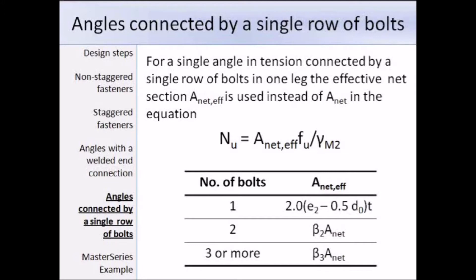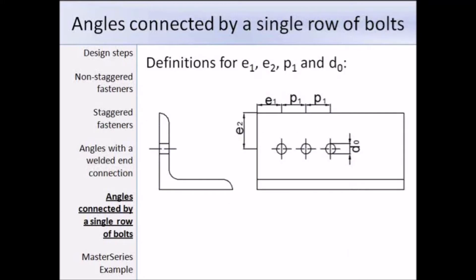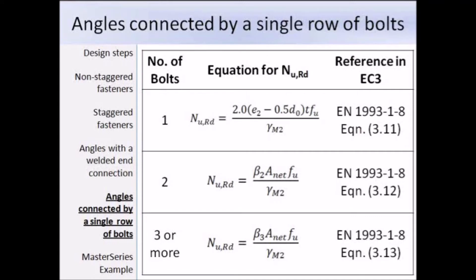We have beta 2 and beta 3, which we need to use in the equations, and I'll show you in a few slides where you get those values from. Here's a diagram showing some of the terms you might need: E1, E2, pitch P1 and the diameter of the hole D0. Here are the equations you will need to work out the ultimate resistance of an angle connected by a single row of bolts, referring to EN 1993 part 1-8 because this relates to joints. You'll have three equations: 3.11, 3.12 and 3.13, and you decide which one to use depending on the number of bolts.